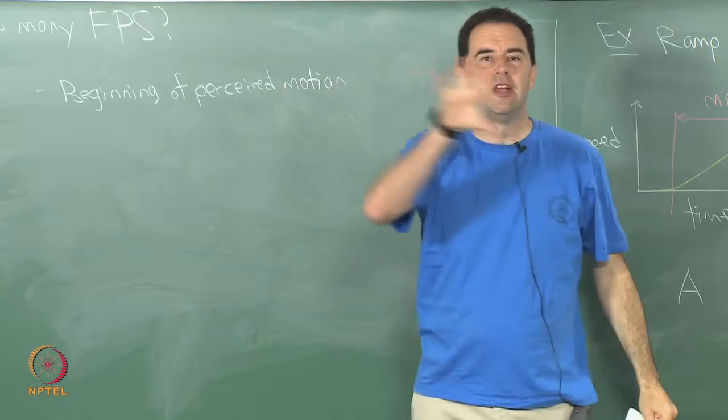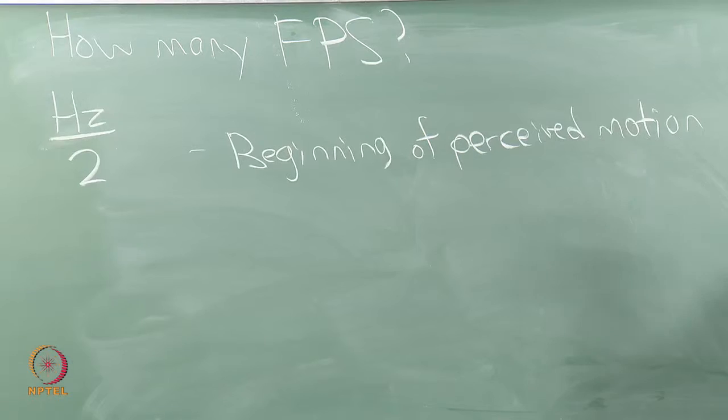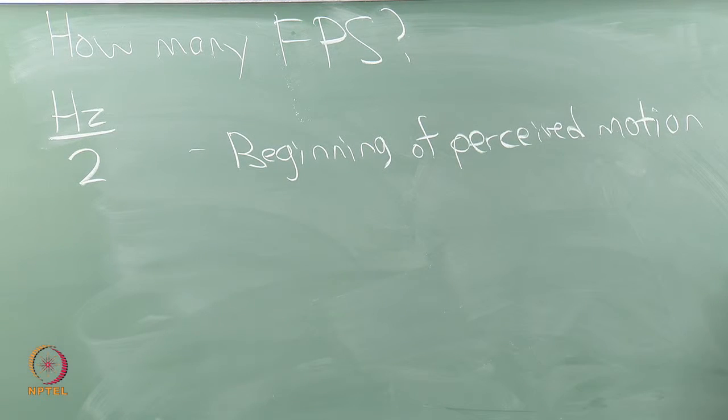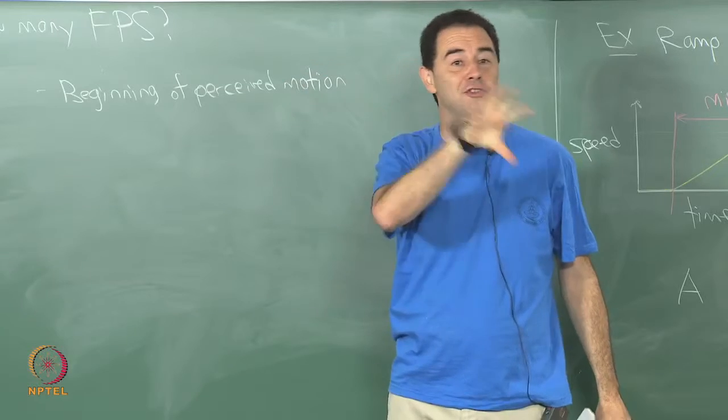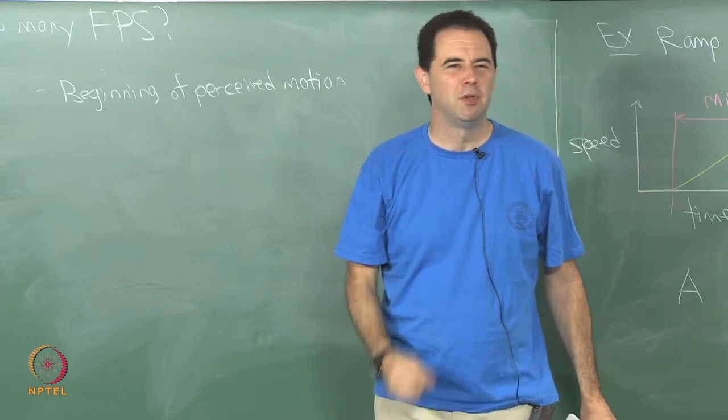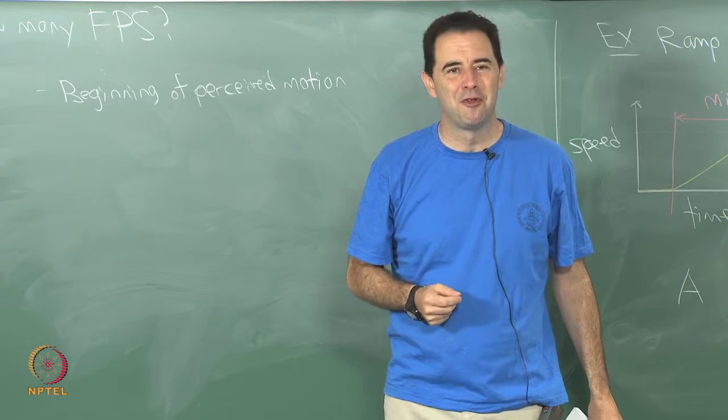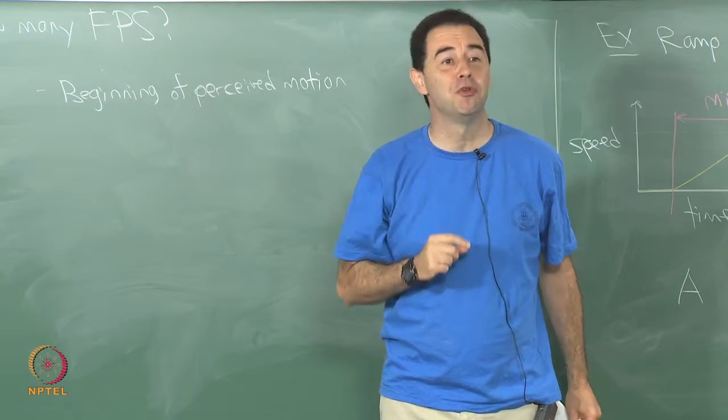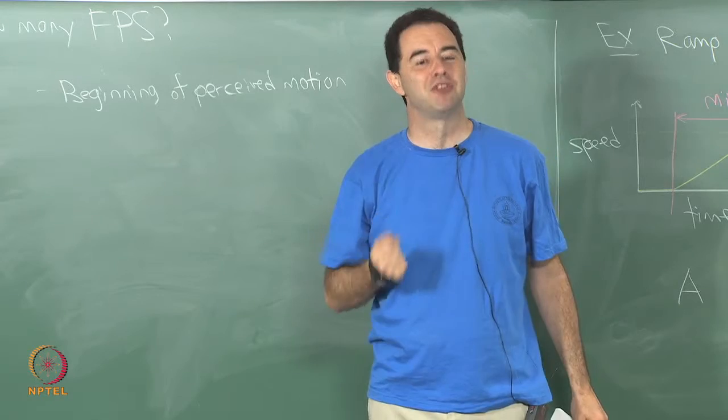In other words, if I just show you two different images—I have maybe a ball, it is in one location in one image, another location in another—and I just oscillate back and forth at 2 hertz, that is already fast enough so that it will appear to you like the ball is moving back and forth. It might not be a very smooth or continuous motion, but you at least perceive some motion in that.